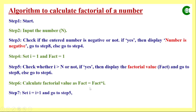For n = 5: i starts at 1, condition i > 5 is false, so fact = 1 × 1 = 1, i becomes 2. Again false, so fact = 1 × 2 = 2, i becomes 3. Again false, so fact = 2 × 3 = 6, i becomes 4. Again false, so fact = 6 × 4 = 24, i becomes 5.